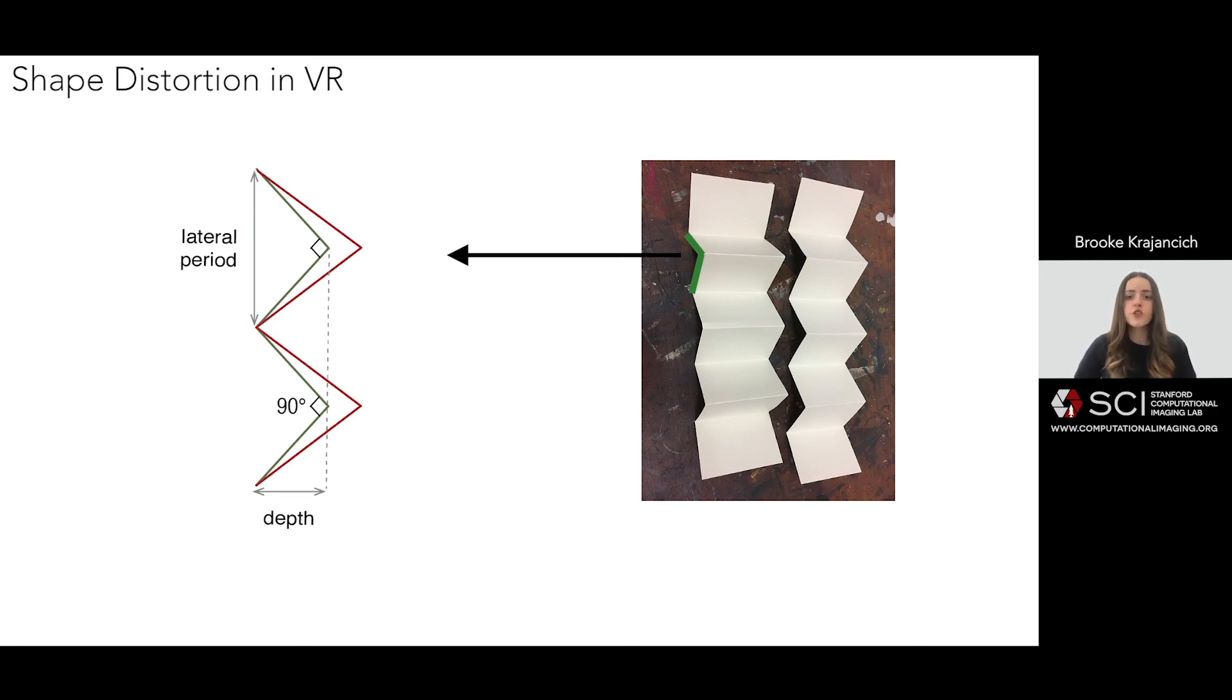As such, we showed users two identical triangle wave patterns horizontally side by side, one with and one without our gaze contingent rendering, and nine subjects were asked to choose which of the two randomly ordered patterns, left or right, exhibited angles closer to 90 degrees.